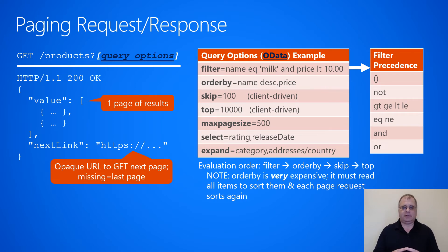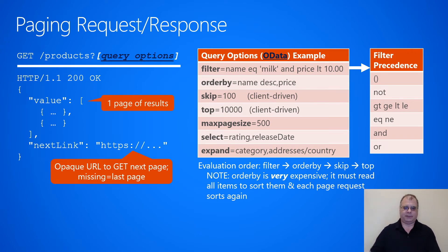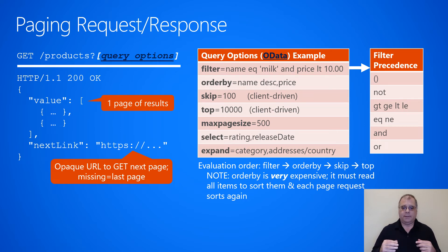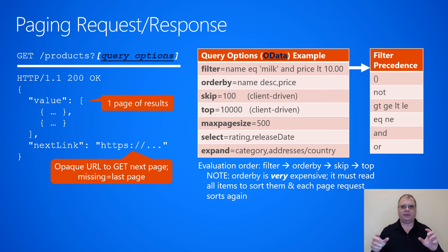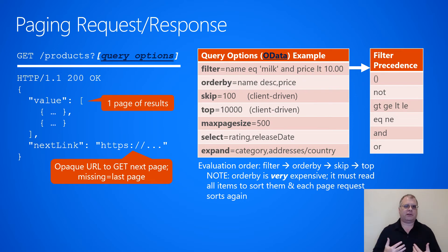Max page size lets a client tell a service the maximum number of items it wants back. For example, the service might normally return up to 10,000 items, but the client can specify a max page size of 500, and the service should not return more than that. However, if a client specifies a very large max page size like 5 million, the service may still restrict itself to 10,000. So max page size is the maximum the client is willing to accept, but the service may return less. There are also select and expand options to control which fields or subsections come back over the wire.